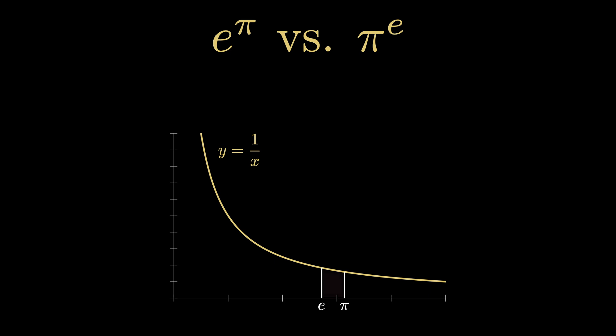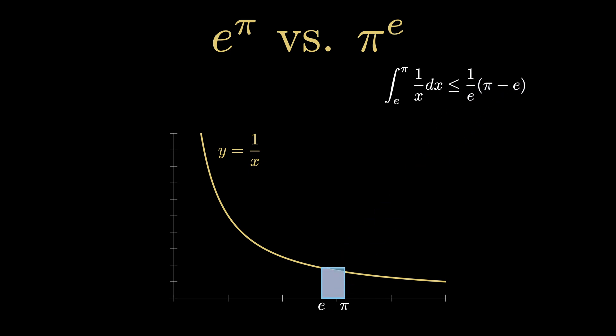The area under the curve between e and pi is represented by the integral from e to pi of 1 over x dx. Because the function is decreasing, the rectangle with height 1 over e lying over the interval e to pi has an area greater than the area under the curve, which is the definite integral.